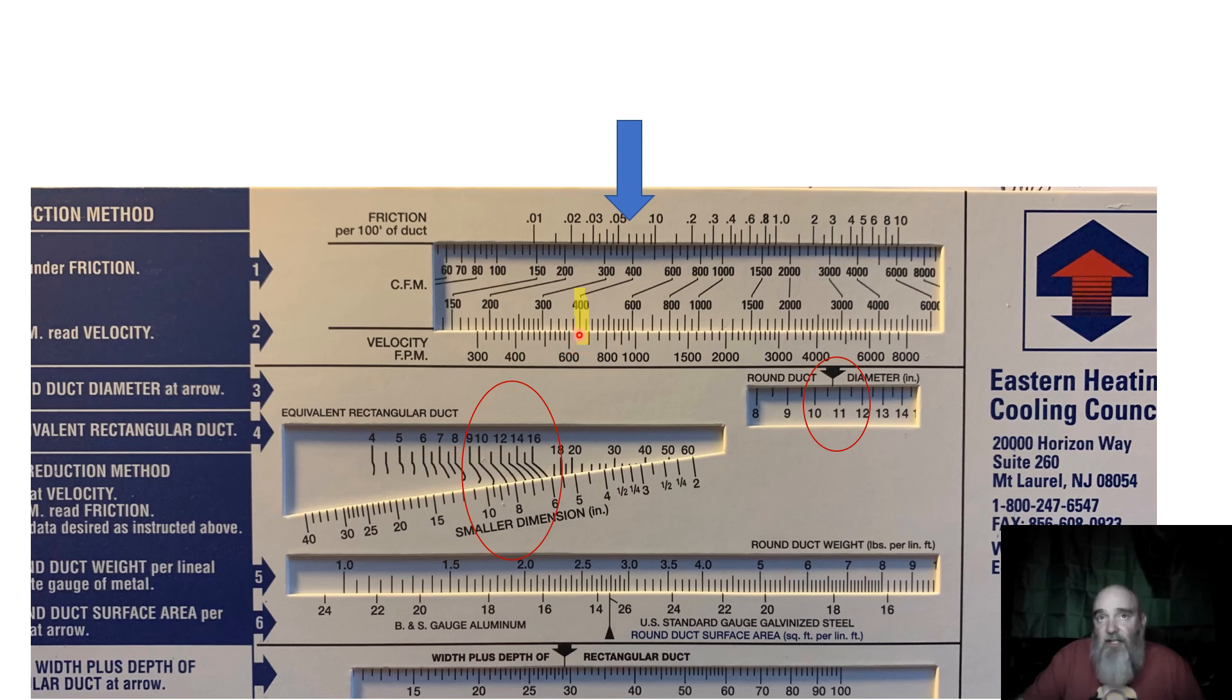If you come down here, you follow the 400 down to here—that tells me that whatever duct size I select from either of these two red circles, the air is going to be moving at a velocity, in this case, of 650 feet per minute.